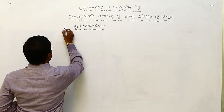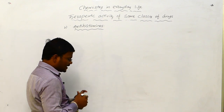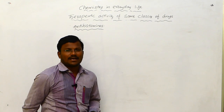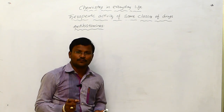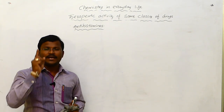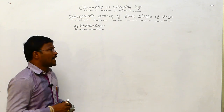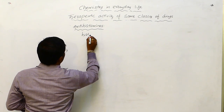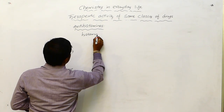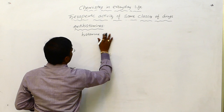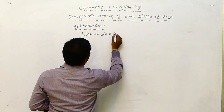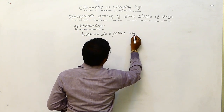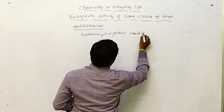So we have to learn what are anti-ulcer drugs. The anti-ulcer drugs are nothing but chemical substances which are useful to block the activity of histamine receptors. What are histamines? Histamine is a potent vasodilator.